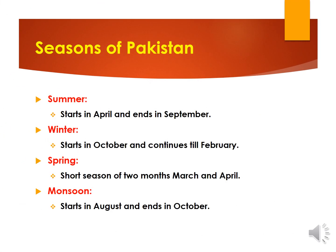My dear students, there are four seasons found in Pakistan. These are the seasons of summer, spring, winter, and monsoon. Summer season starts in April and ends in September. Winter starts in October and continues till February. Spring is a relatively short season of two months — March and April. Monsoon is the rainy season; it starts in August and ends in October.